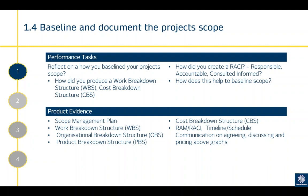Reflect on how you baselined the project scope and how you produced the scope plan. The scope plan will involve a work breakdown structure, an organisational breakdown structure, and combining them into a responsibility assignment matrix. It may also include a product breakdown structure and a cost breakdown structure. These breakdown structures are typically the main components of your scope management plan, though it may differ from organisation to organisation and project to project. Product evidence could be your scope management plan, work breakdown structure, organisational breakdown structure, product breakdown structure, cost breakdown structure, or your RAM/RACI.